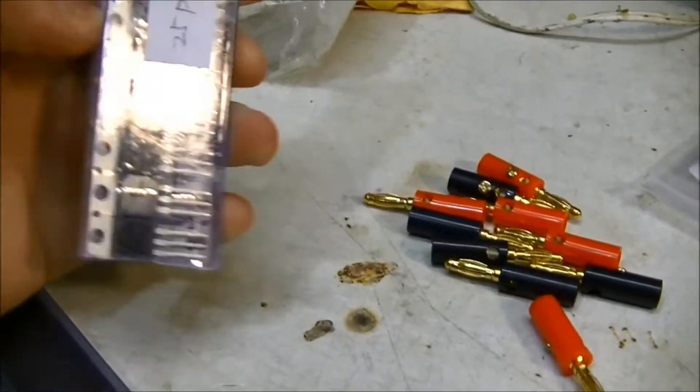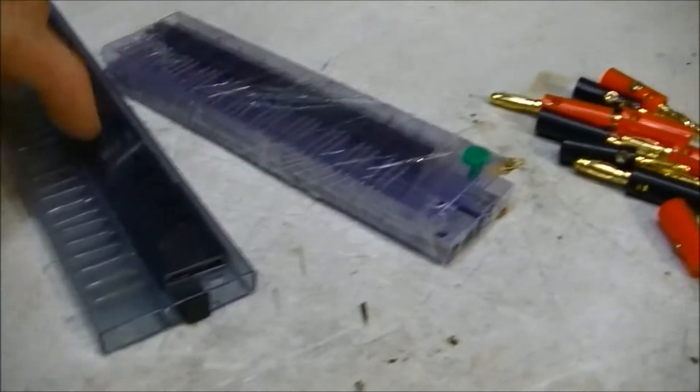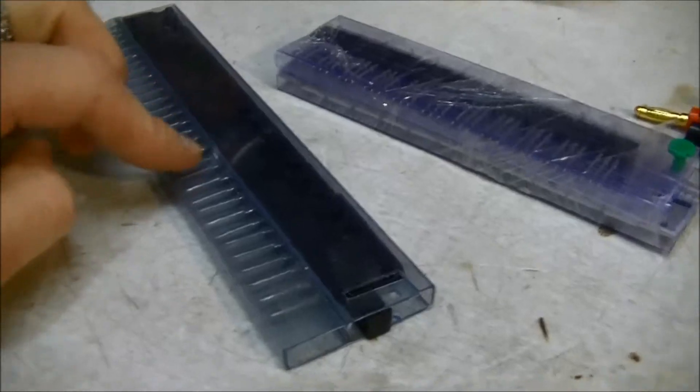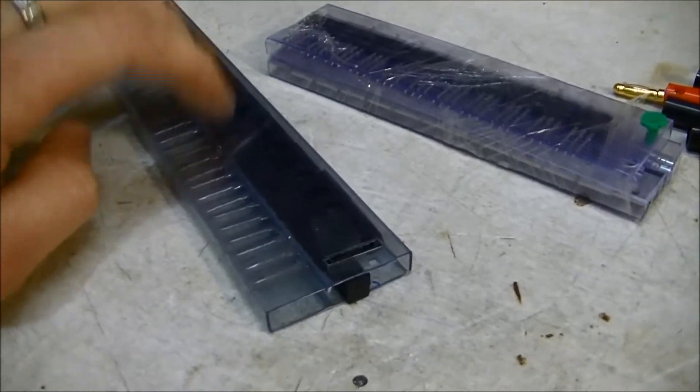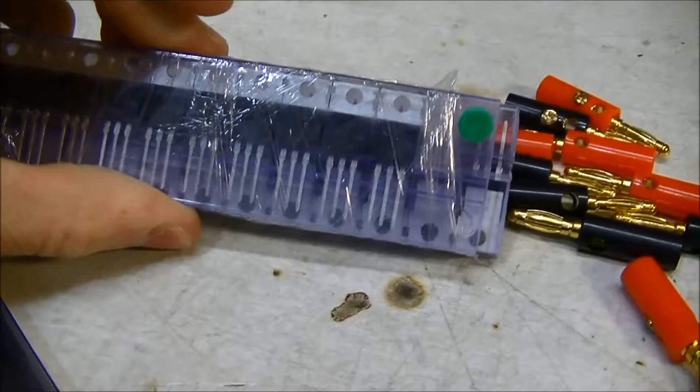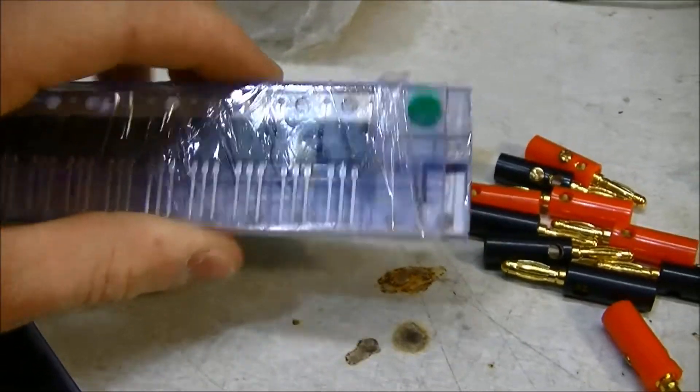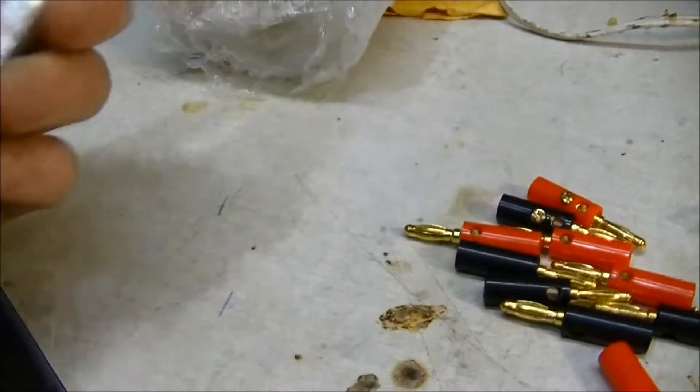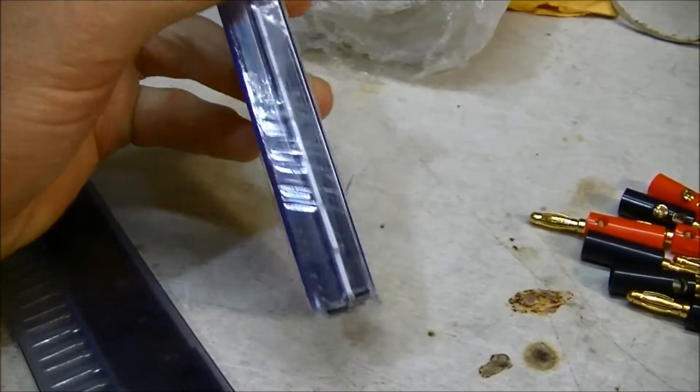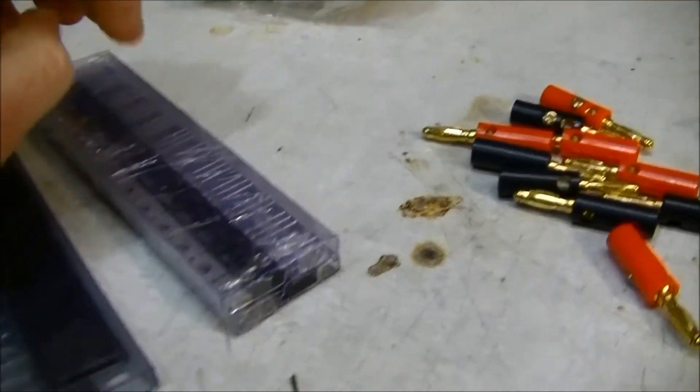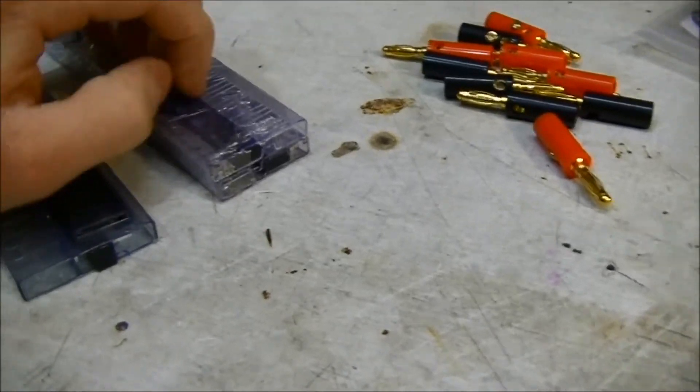These are some TIP-31 transistors, 25 of those, and there's 10 of these. These are actually probably the most expensive thing of the whole buy, about $12 I think for all those. These are some TIP-31C transistors, and those will be used for just general stuff and Tesla coils.